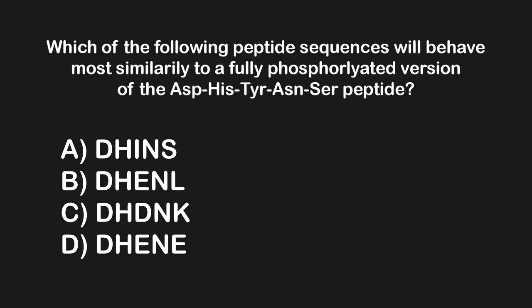The next question asks: which of the following peptide sequences will behave most similarly to a fully phosphorylated version of the aspartate–histidine–tyrosine–asparagine–serine peptide? First, we identify the phosphorylation sites — that's Y, S, and T. Here we can phosphorylate tyrosine and serine. When doing a substitution, we either want those sites to remain as YST molecules, or — since phosphorylated residues are equivalent to D or E — substituting tyrosine and serine with aspartic acid or glutamic acid would also be a good answer.